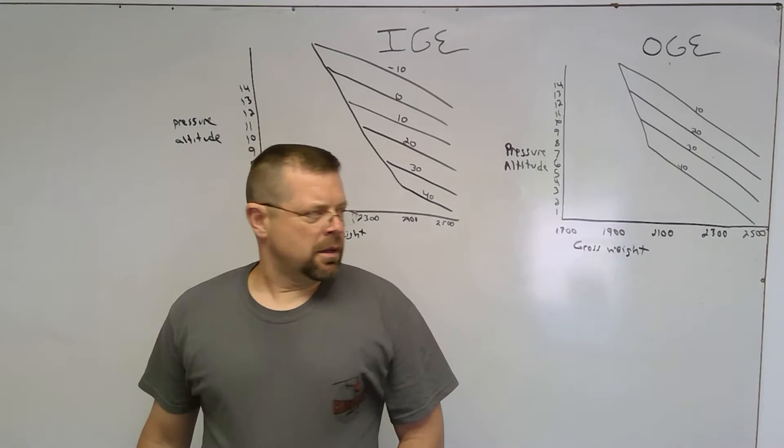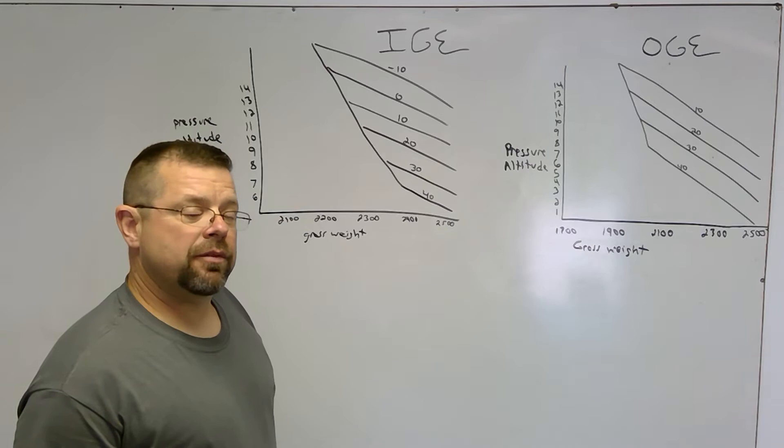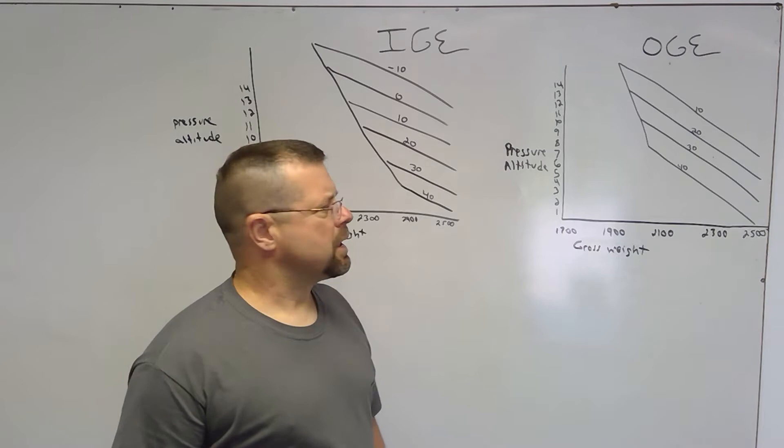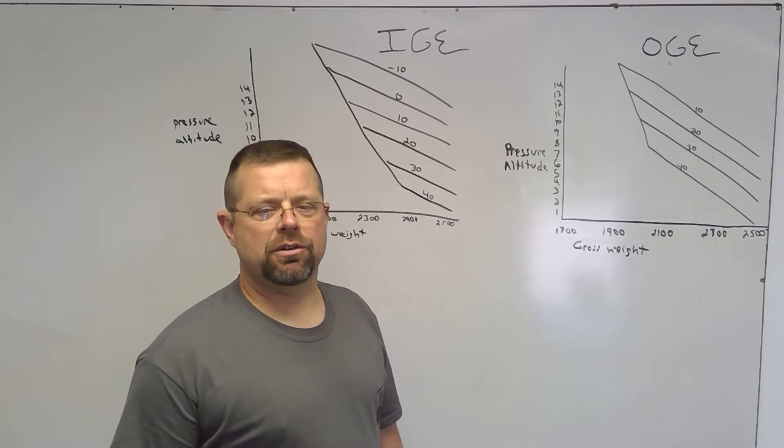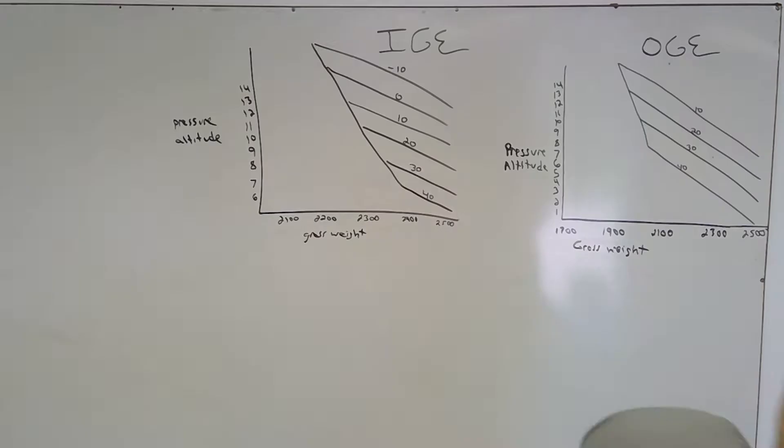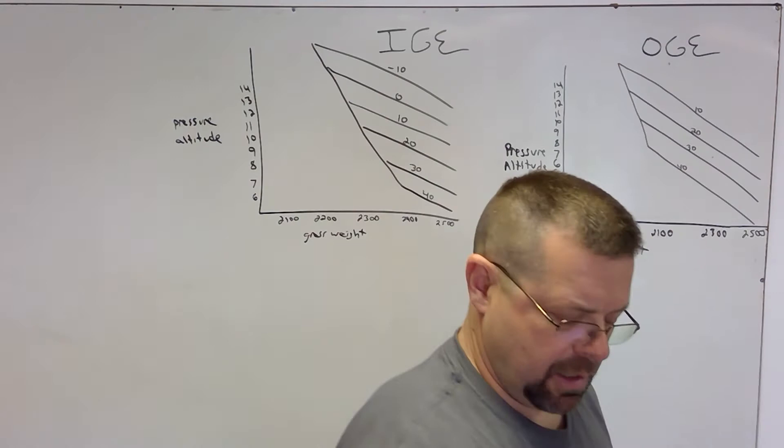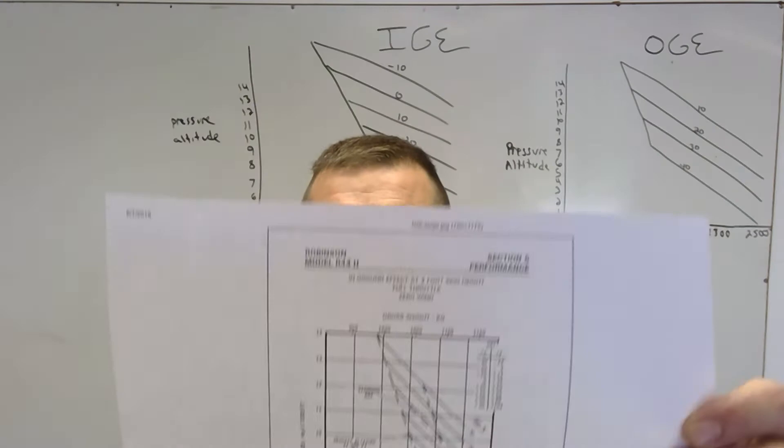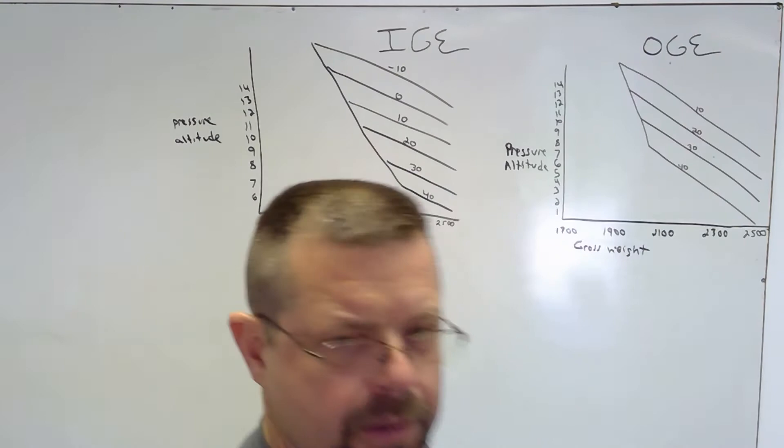I've drawn out-of-ground effect and in-ground effect hover ceiling charts with make-believe numbers, roughly going off the R44 POH just for the purpose of demonstrating how to use these charts. If you go online, you can actually print the in-ground effect and out-of-ground effect charts from the R44 pilot operating handbook.